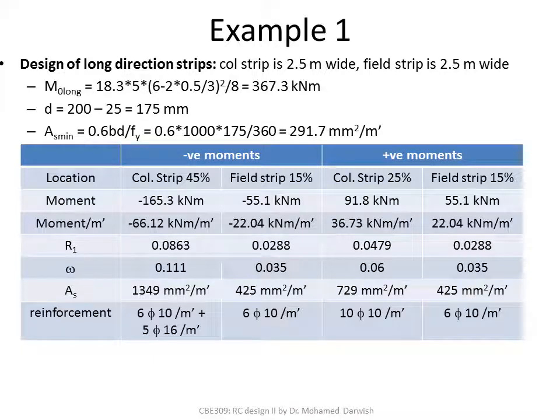Calculating the four moment values — negative and positive moments in the column strip and field strip — you need to divide the moment by the strip width to get it per meter run. The R and ω calculation leads to different steel areas. The highest is the negative moment in the column strip at 45%. Then the positive moment in the column strip, and the field strip positive and negative moments are similar. The base mesh will be ⌀6/510 (upper and lower), with additional ⌀5/516 at the negative column strip and ⌀4/510 at the positive column strip.